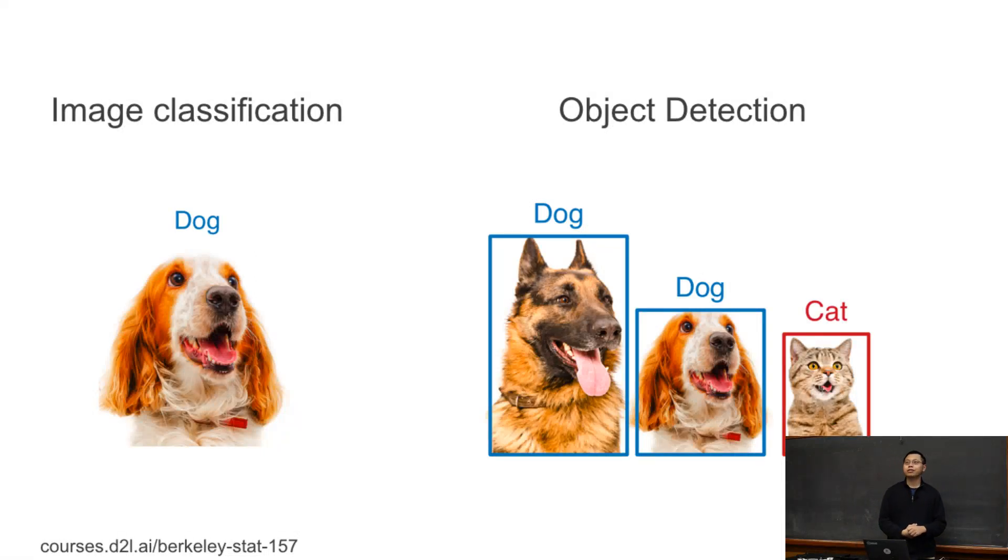In image classification, we're trying to identify the main objects in the image. Usually we assume this image only contains a single large object. But for object detection, we're trying to grab all the interesting objects in a single image. So here we have two dogs, one cat. Besides knowing what objects we have, we also want to know the location of these objects using rectangle boxes called bounding boxes.